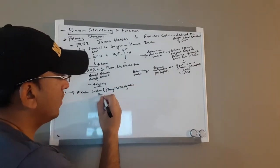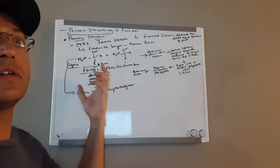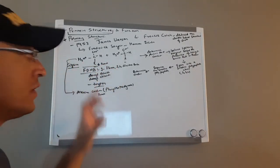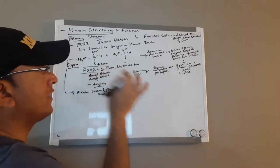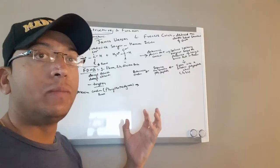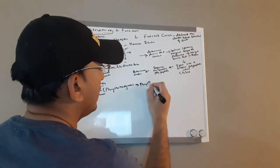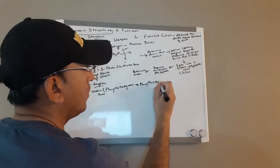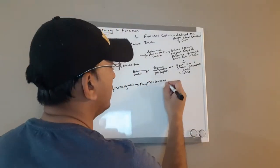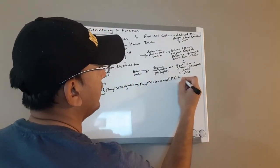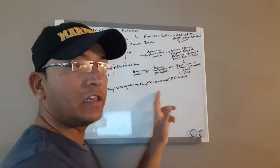In this first step, the amino terminal amino acid reacts with phenyl isothiocyanate and is converted into a phenyl thiocarbamyl, also known as a PTC adduct. This first amino acid is converted into this derivative.